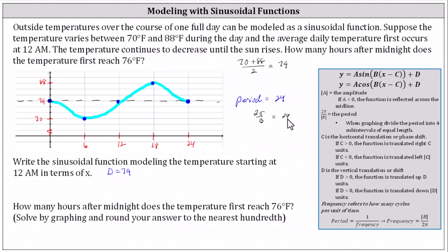To solve for b let's first multiply both sides by b to clear the denominator. Simplifying we have 2π equals 24b. Dividing both sides by 24 and simplifying we have b equals 1/12π or π divided by 12. Let's also record this below.